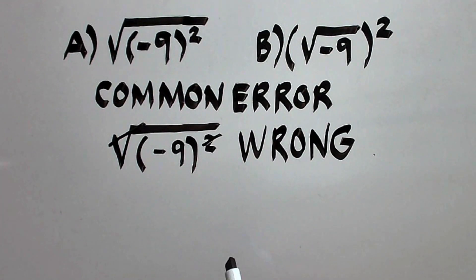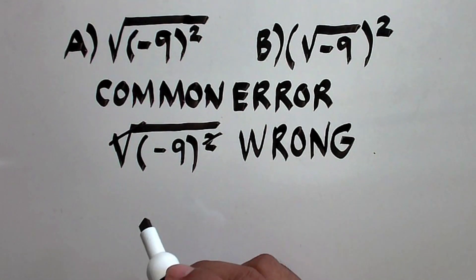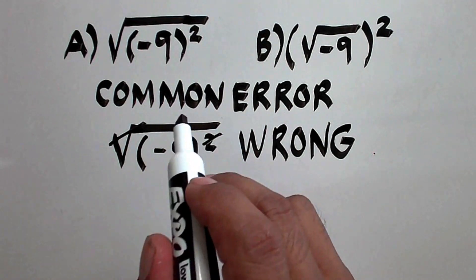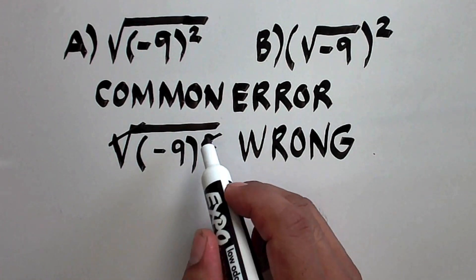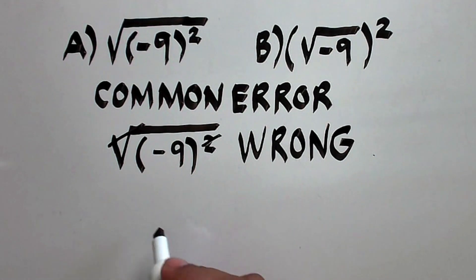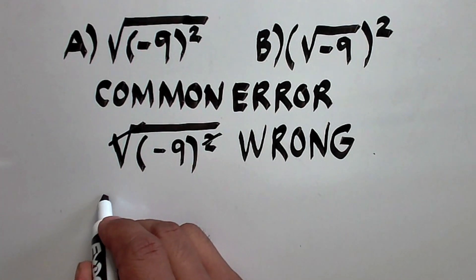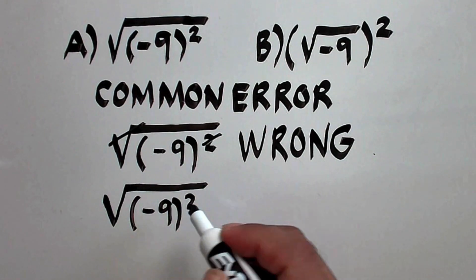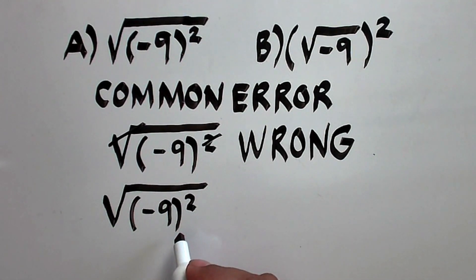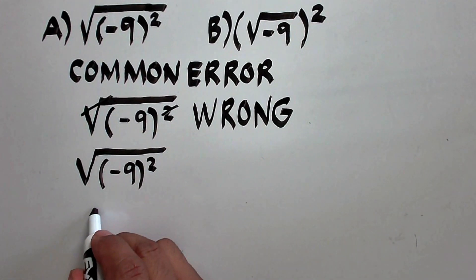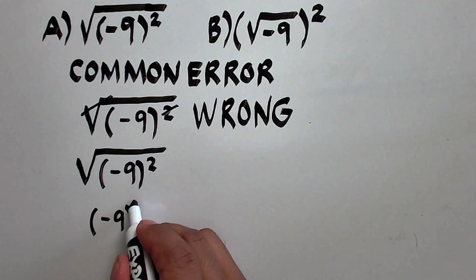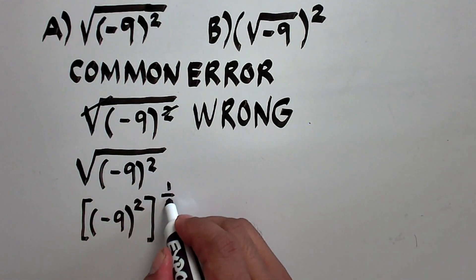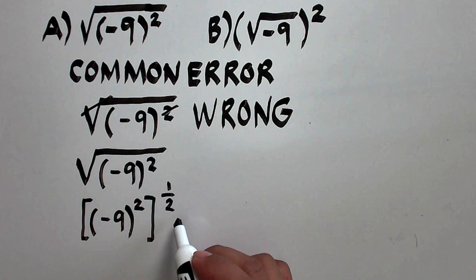What's the reason? Notice that you have here two operations that are both exponents. You have the inside exponent 2 and you have the outside exponent 1/2, because a radical is a fractional exponent. The right way of doing this for letter A is when you have the square root of the quantity of negative 9 squared — we are going to convert this into exponential form. So we copy the base: negative 9 raised to the second, all raised to exponent 1/2, because this square root means fractional exponent 1/2.